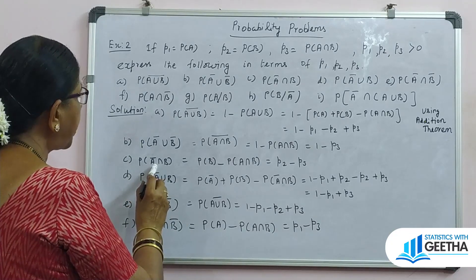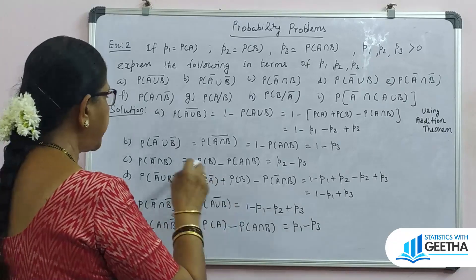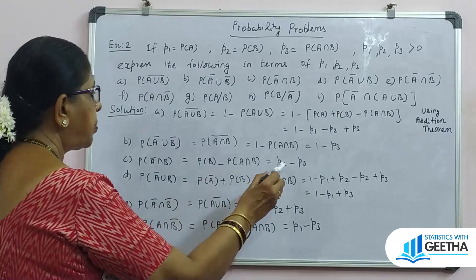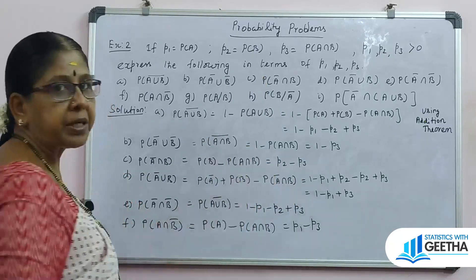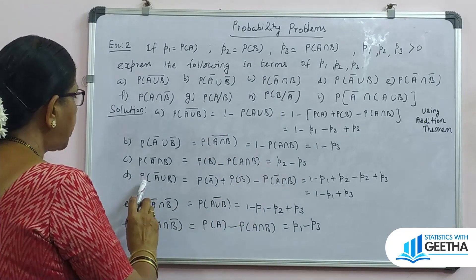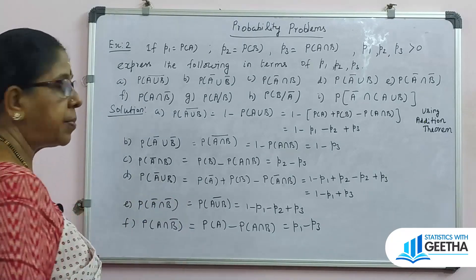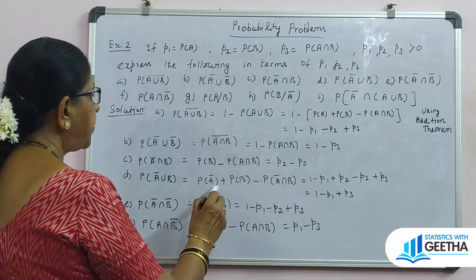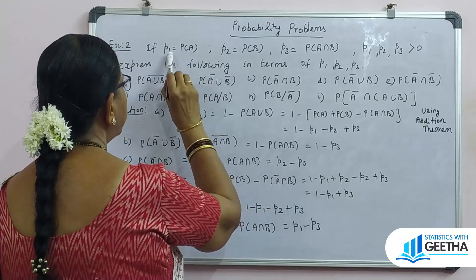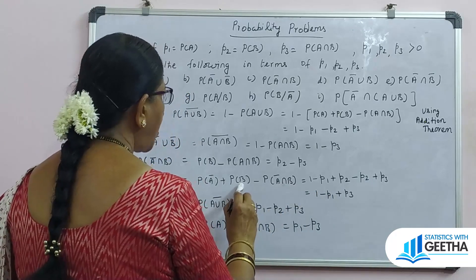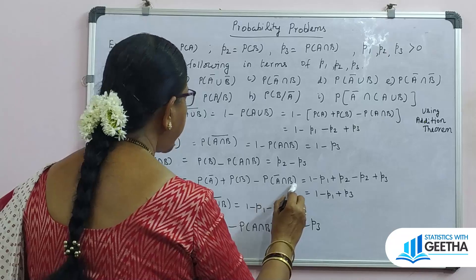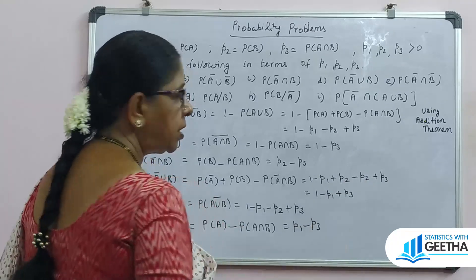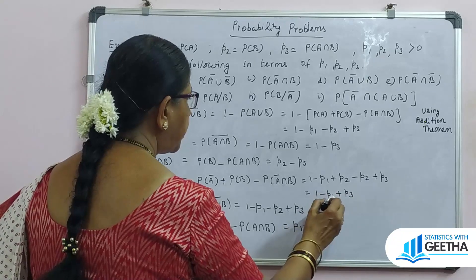For (c): probability of A complement intersection B equals P(B) minus P(A intersection B) equals P2 minus P3. For (d): probability of A complement union B — applying the addition theorem: P(A complement) plus P(B) minus P(A complement intersection B) equals (1 minus P1) plus P2 minus (P2 minus P3), which simplifies to 1 minus P1 plus P3.